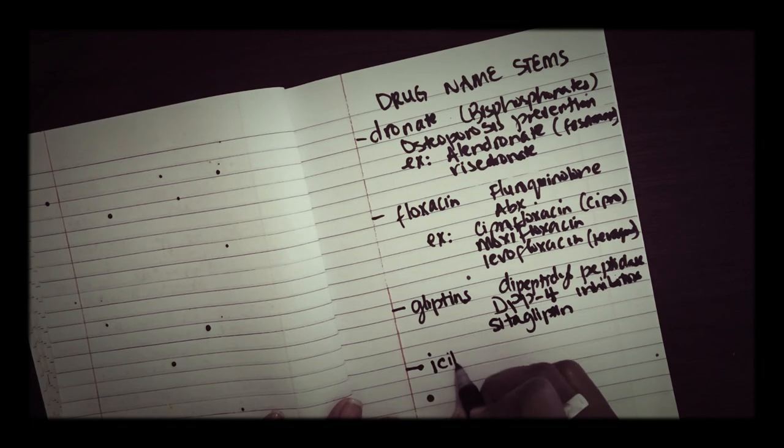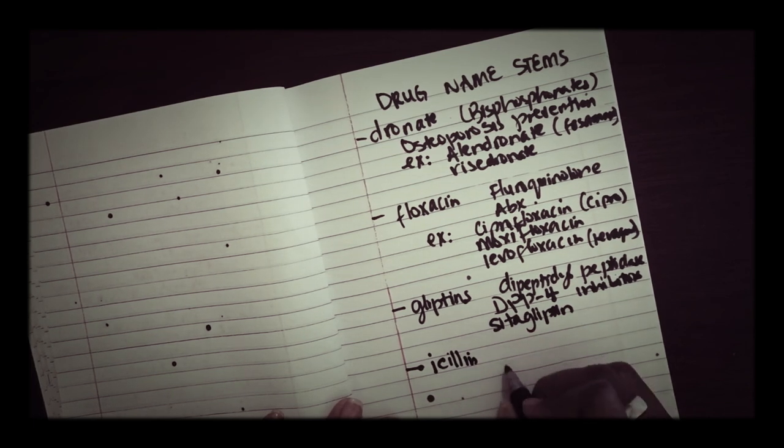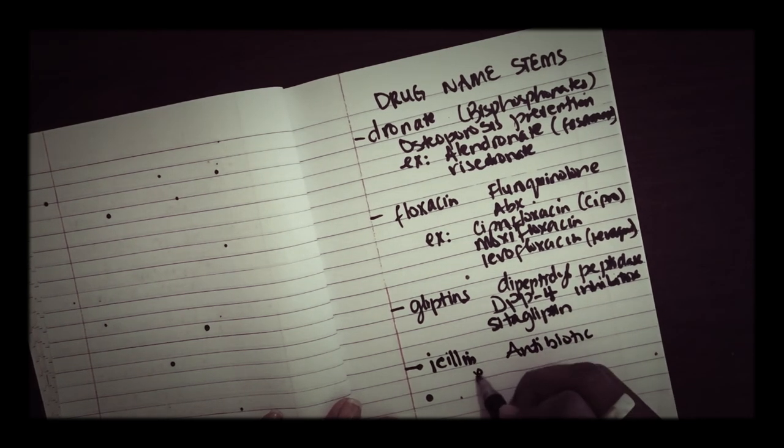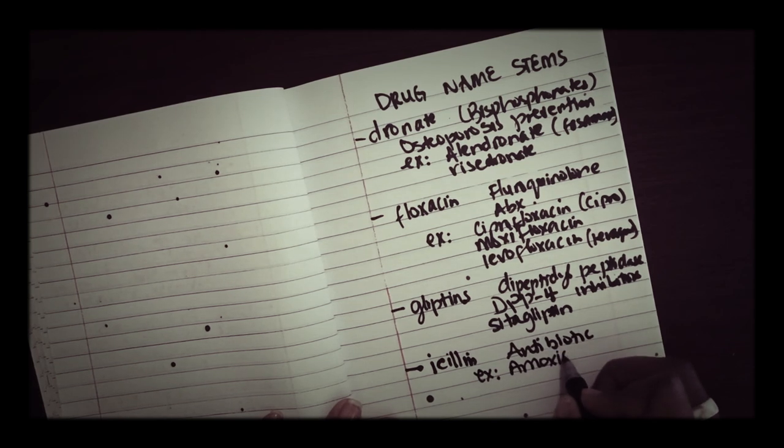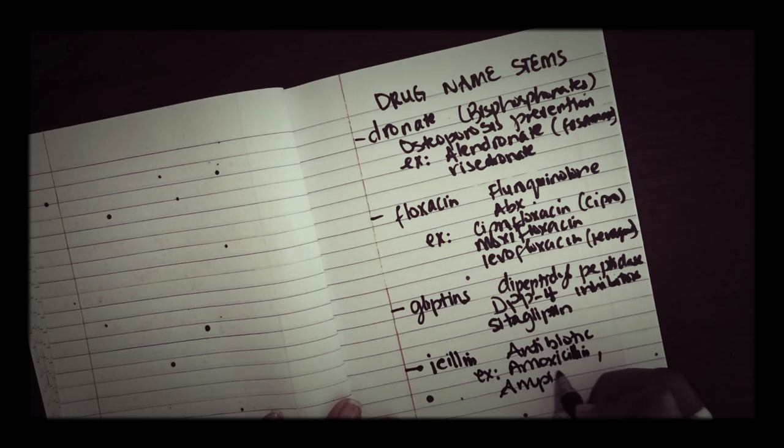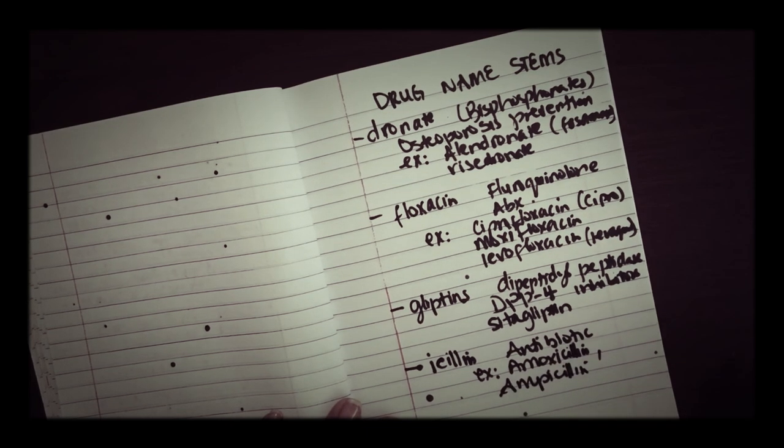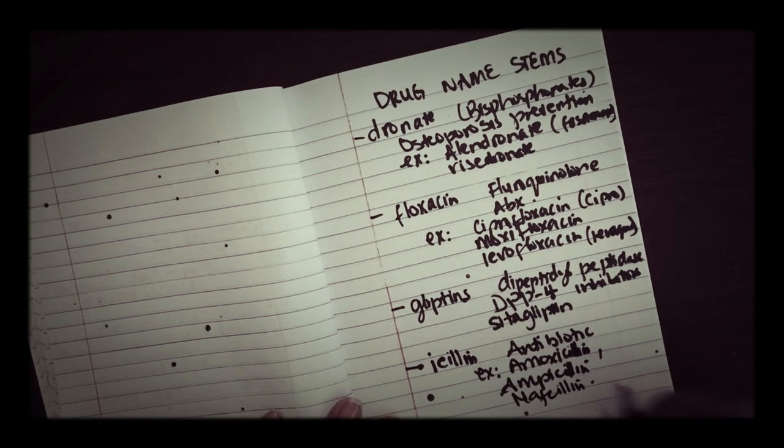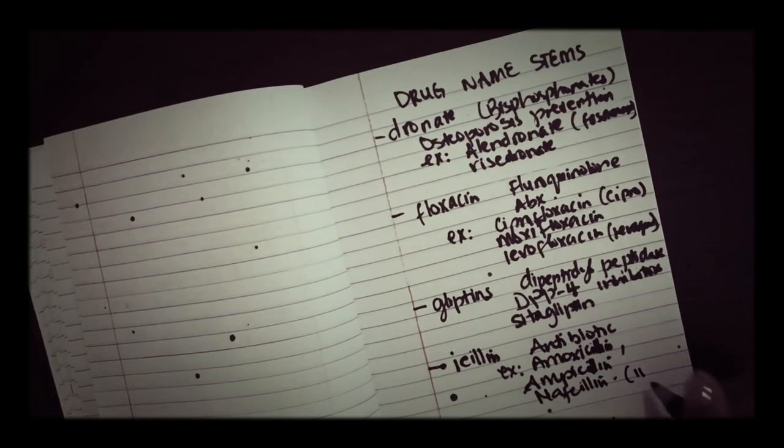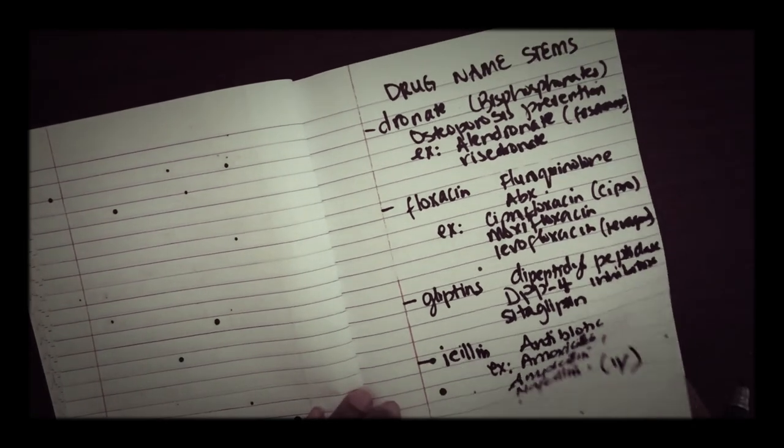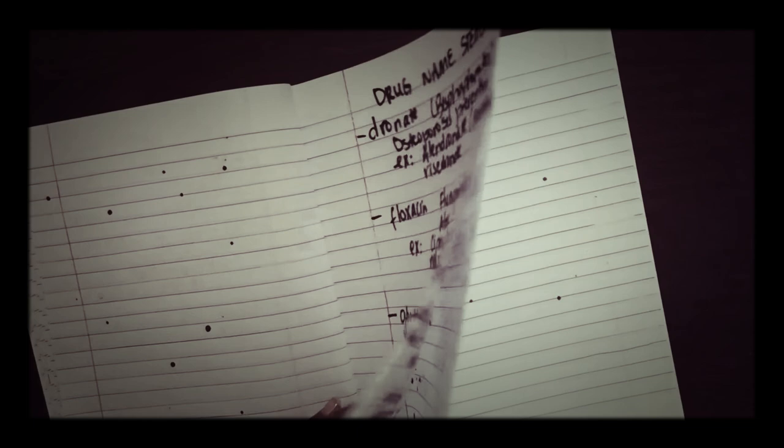And of course we can't forget our penicillins, the -cillins. We have a lot of penicillins. These are penicillin antibiotics such as amoxicillin, ampicillin, nafcillin. Nafcillin is seen mostly in the hospital, it's an IV medication.